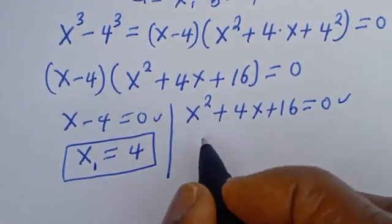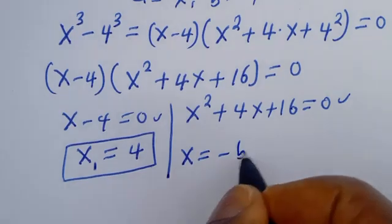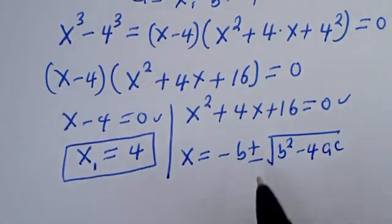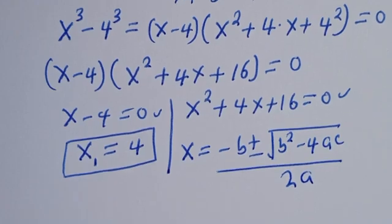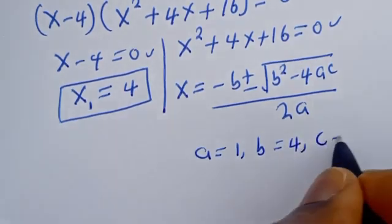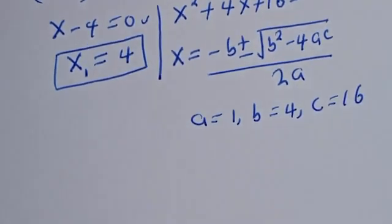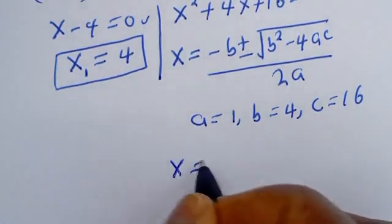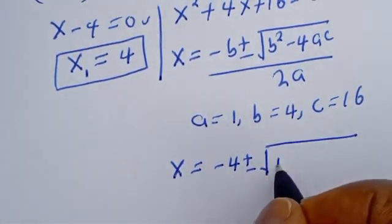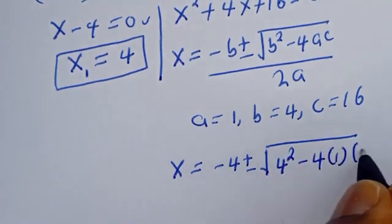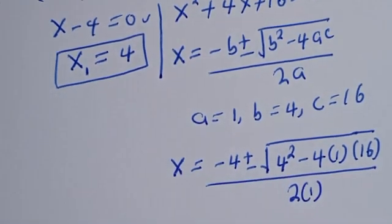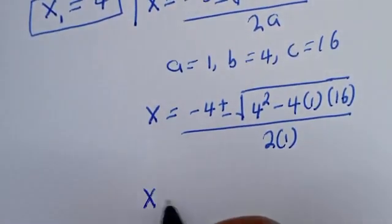The second case is s² plus 4s plus 16 equal to zero, a quadratic equation. Using the quadratic formula, s equals minus b plus or minus square root of b² minus 4ac, all over 2a, where a equals 1, b equals 4, and c equals 16.